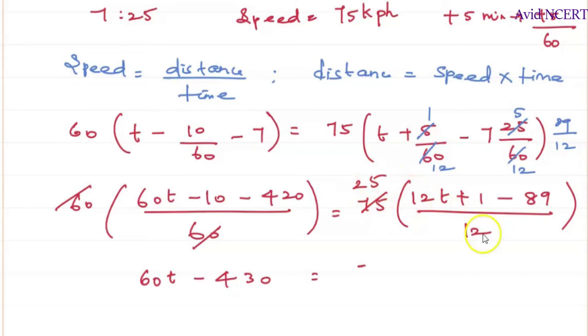Which equals 75. This can also be simplified, which is in three tables, 3, 2 times is 6, 3, 5 times is 15 and 3, 4 times is 12. So it is 25 times 12t plus 1 minus 89 is 88 divided by 4.